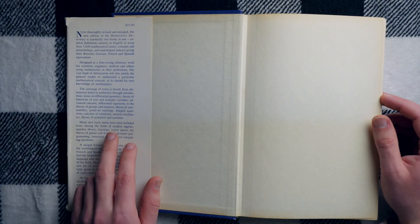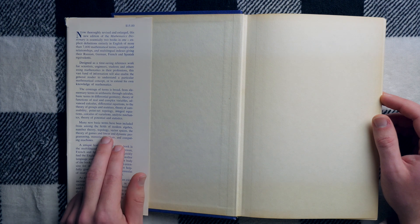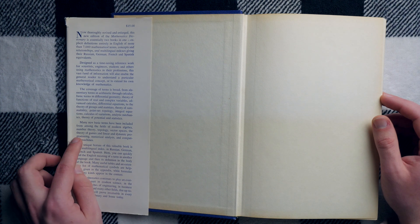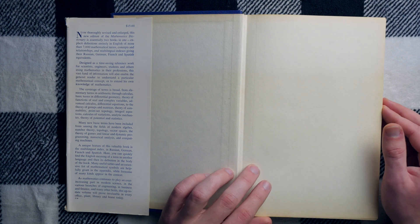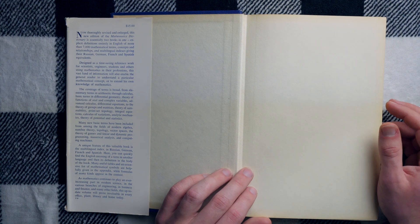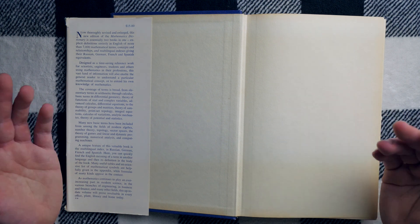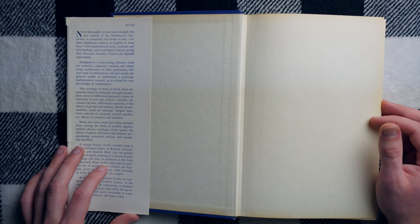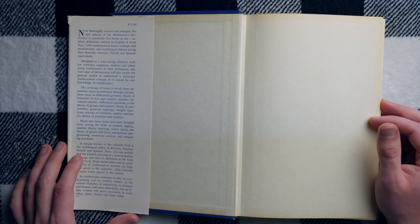The coverage of terms is broad, so it goes from elementary terms and arithmetic through calculus, basic terms and differential geometry, and it goes on and on. Many new basic terms have been included from among the fields of modern algebra, number theory, topology, vector spaces, game theory, linear and dynamic programming. That's very cool. I like how modern algebra has all these different names. Modern algebra, university algebra, which of course is very different from college algebra. It's also called abstract algebra. I like abstract algebra probably as its name the best because I feel like that is perhaps the most descriptive.